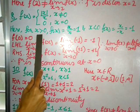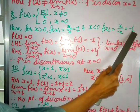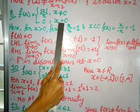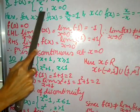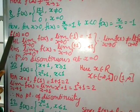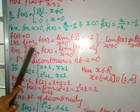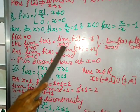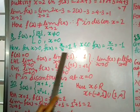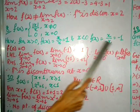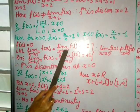Since x > 0 gives 1, I use that for the right-hand limit, and x < 0 gives −1 for the left-hand limit. Checking continuity at x = 0: f(0) = 0 (given). The left-hand limit — lim(x→0⁻) f(x) — uses the x < 0 case, which gives −1.